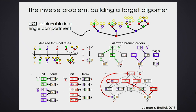This tree cannot be made in one compartment — I've given an example of a tree that no Golgi apparatus with any amount of fancy enzymes can make in a single compartment. But the Golgi has multiple compartments. This tree, if you work it all out, can trivially be made in two compartments. And here's the push: this is the reason why the Golgi has multiple compartments.